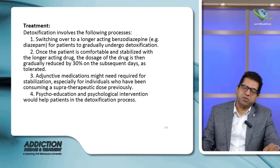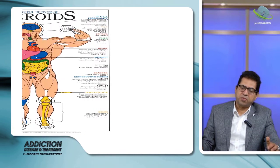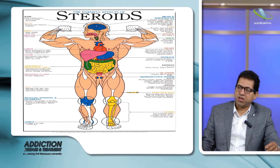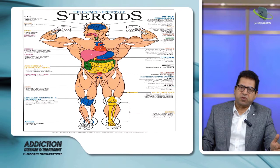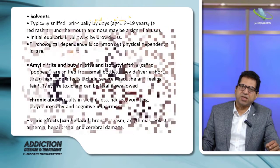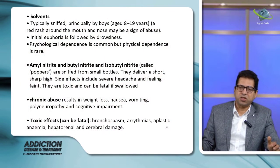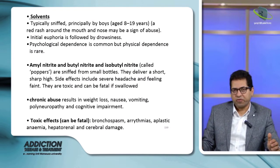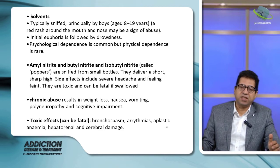Steroids are another drug used by many people, especially adolescents, to increase muscle bulk and can affect the body in several ways. Inhalants or solvents are lipid-soluble substances that can pass the blood-brain barrier very rapidly, dissolving the lipid component of cell membranes and leading to significant effects and manifestations.